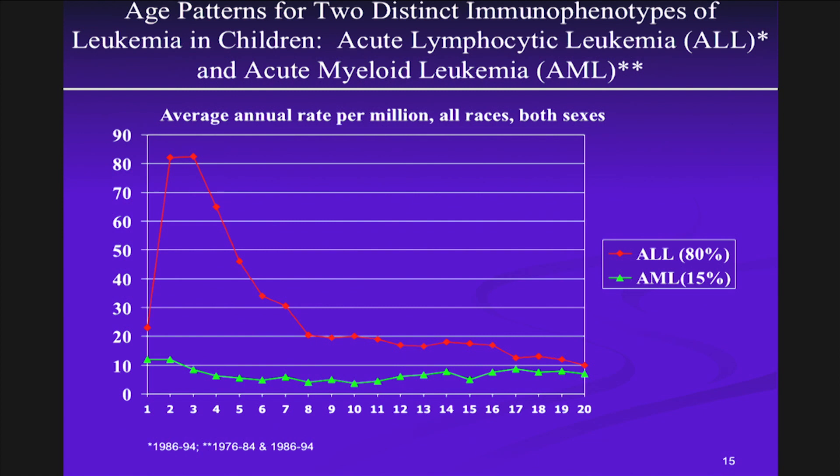The red line shown in this graph shows the characteristic peak of lymphoid leukemias in children between the ages of 2 and 5, whereas for the myeloid leukemias, that age pattern is essentially flat.